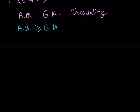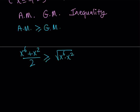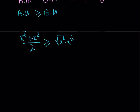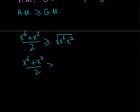The arithmetic mean of two numbers is greater than or equal to their geometric mean. Let's use this with x to the sixth and x squared: I'm going to add them and divide by two, or multiply them and take the square root. So x to the sixth plus x squared divided by two is greater than or equal to the square root of their product, which is x to the eighth. Since that's always positive, the square root of x to the eighth becomes x to the fourth.